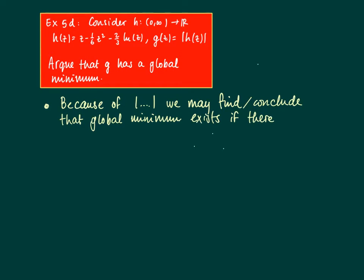If there is an X with G(X) = 0, then this is equivalent to H(X) = 0. So if we can find a zero or root of H, we're done.